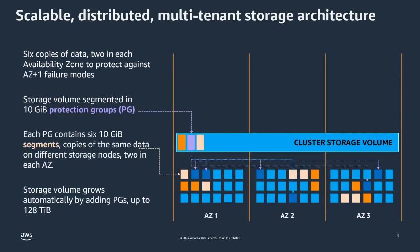What we're looking at here is a representation of an Aurora cluster storage volume. The volume spans three availability zones, and within each availability zone there are many individual storage nodes represented by small squares. Each storage node is a multi-tenant EC2 instance with directly attached NVMe storage. When a write is performed within Aurora, the log records are sent to six storage nodes — two in each AZ. Once four of them acknowledge receipt, the write is considered durable and the log sequence number is incremented.